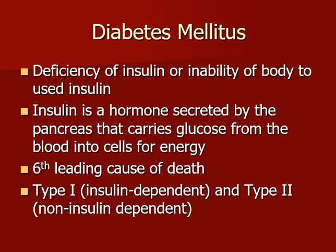Shifting gears now to diabetes. Diabetes is a deficiency of insulin or the inability of the body to use insulin. Insulin is a hormone secreted by the pancreas that carries glucose from the blood into the cells for energy. It is the sixth leading cause of death. Type one is insulin dependent and type two is non-insulin dependent.